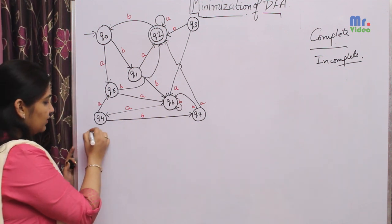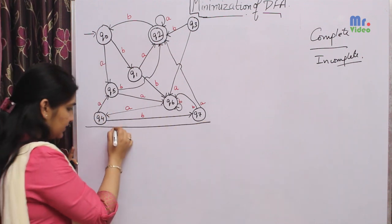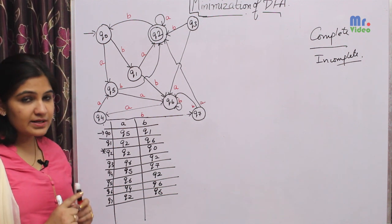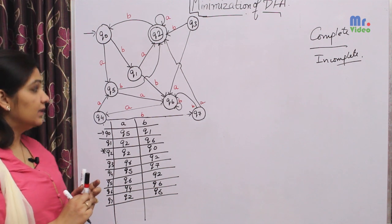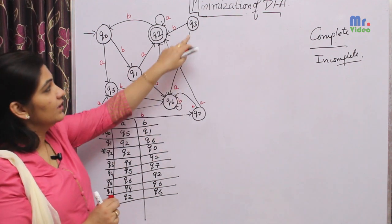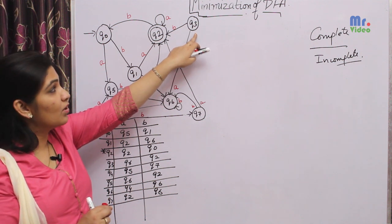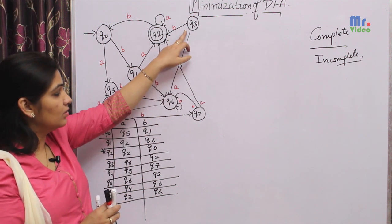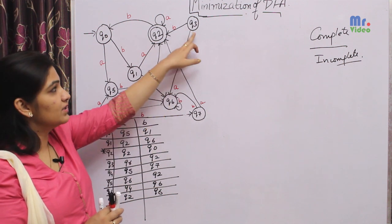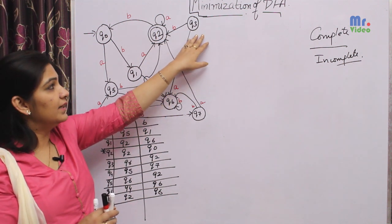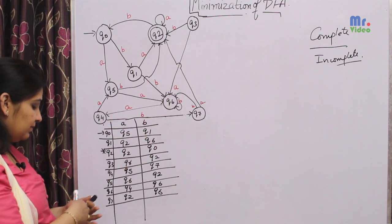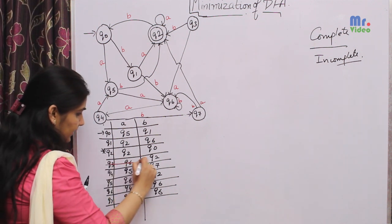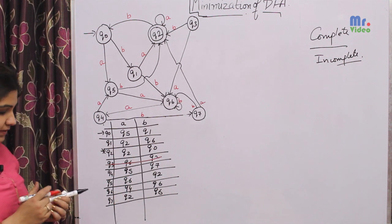Regarding the minimization of DFA using the direct method, first draw the transition table. The first step is to eliminate the unreachable states — those states which cannot be reached from the initial state. Looking at the diagram, Q3 is an unreachable state because it cannot be reached from the initial state either directly or indirectly. It points towards Q2 or Q6, but it has no incoming arrows. So it cannot be reached from the initial state, and we will eliminate Q3 from the transition table.